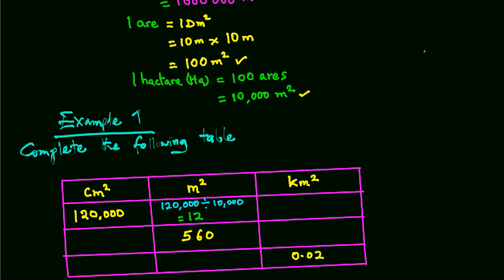And to convert square meters to square kilometers, we divide the square meters given by 1,000,000. This would give us 0.000012 square kilometers.